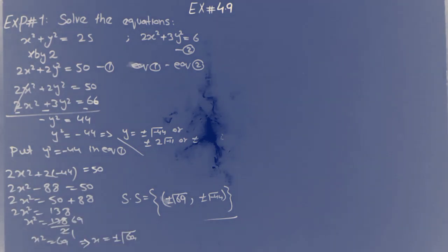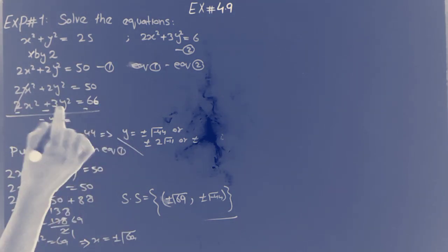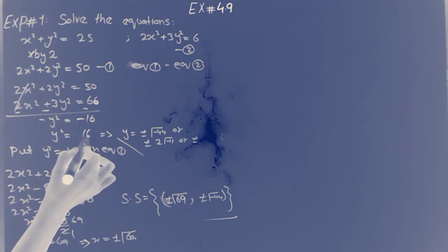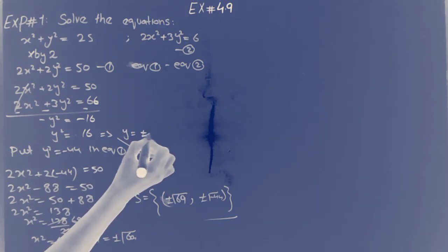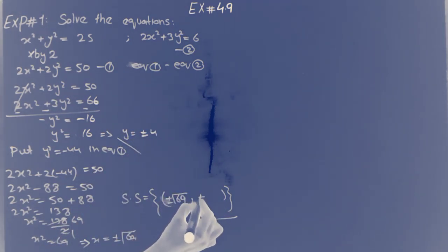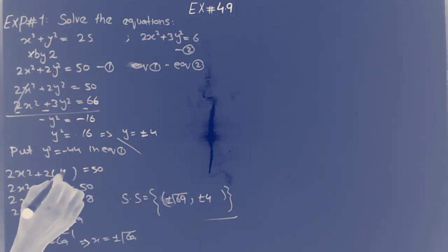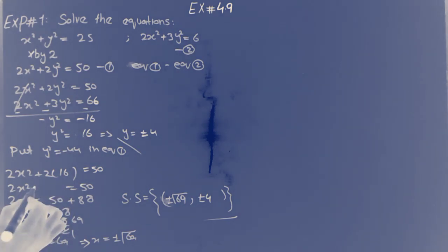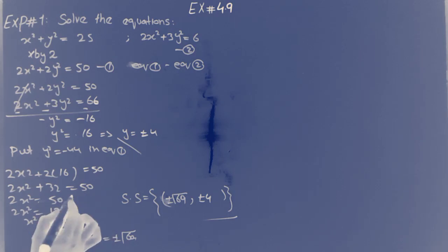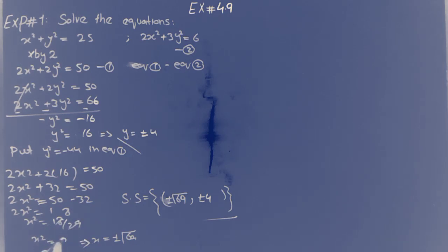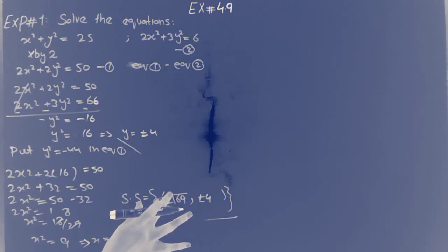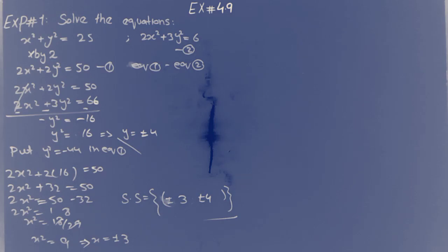Solving with 66: we get minus 16, so y-square equals 16. The square root gives y equals plus or minus 4. Substituting 16 back, we get plus 32 and minus 32. Then 50 minus 32 gives 18; 18 divided by 2 gives 9; square root of 9 gives x equals plus or minus 3. So example 1 is solved with constant 66.